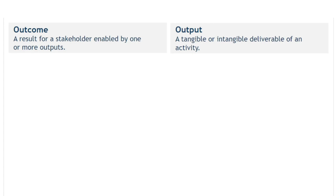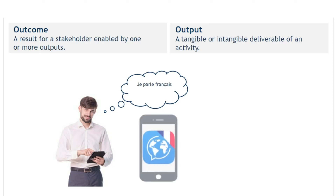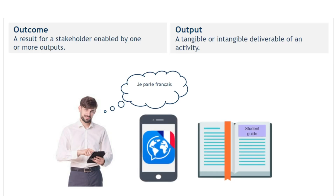A simple example may illustrate the difference between outcomes and outputs. A company provides a language learning service through a software application that customers can download via the Internet. The company's sales message is that users will be able to learn a foreign language to a conversational degree of proficiency within six months in a fun and engaging way, with only 10 minutes per day study. These messages are targeted to the desired outcomes of their potential customers. The application itself, the course of lessons, the supplementary podcasts and other materials downloadable to a mobile device, are all outputs of this service designed to help the student achieve the desired outcome of language proficiency.